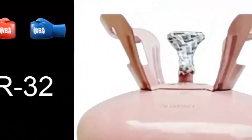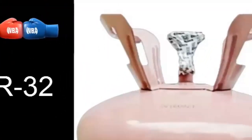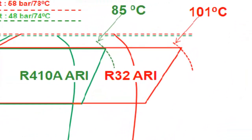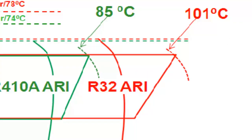R32 exhibits a higher temperature at the compressor outlet compared to R410A. Therefore, it is crucial when working with R32 to use high viscosity POE oils, ensuring greater viscosity stability as temperature changes.